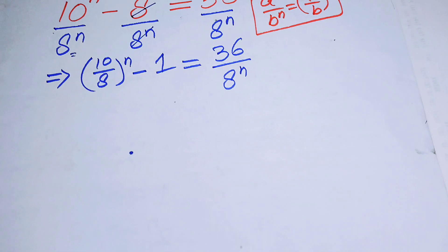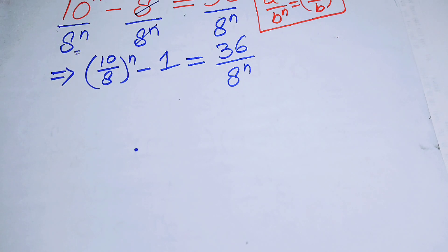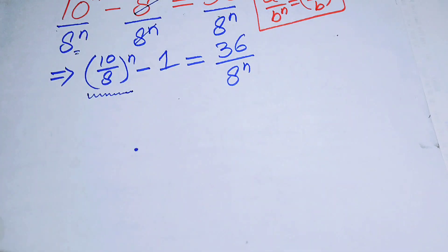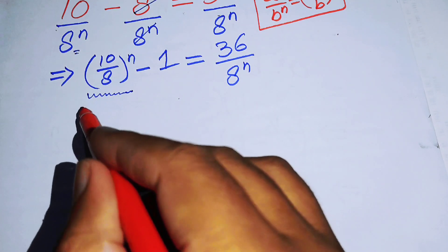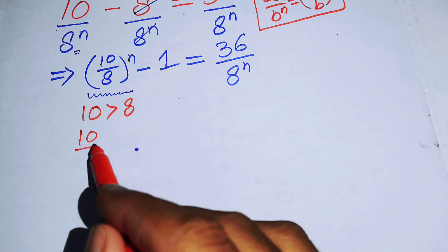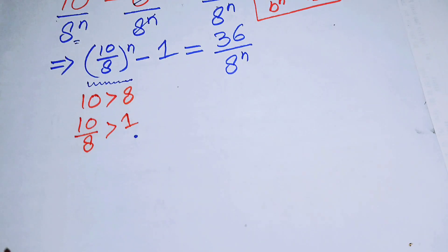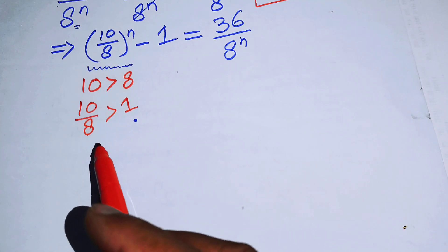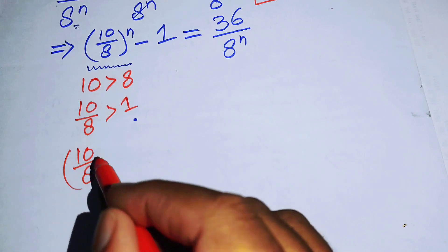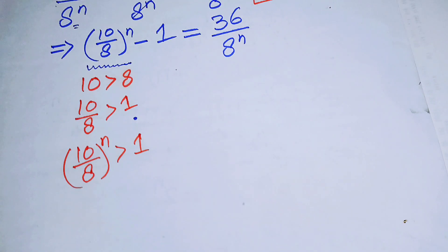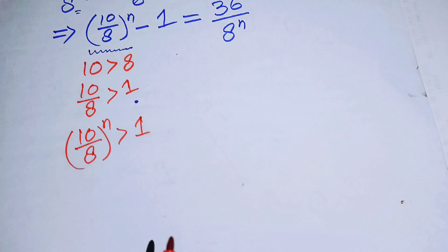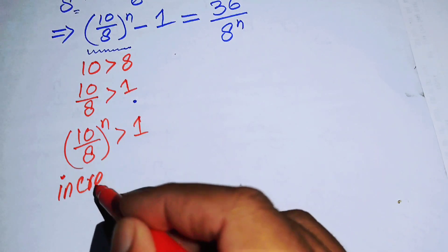Now let's focus on both sides. On the left hand side we have (10/8)^n. Since 10 is greater than 8, dividing gives 10/8 greater than 1. When a base is greater than 1, the exponential is an increasing function, so (10/8)^n is greater than 1 and is an increasing function of n.